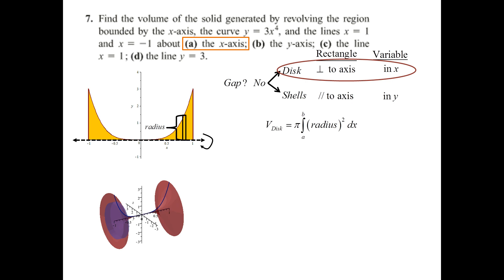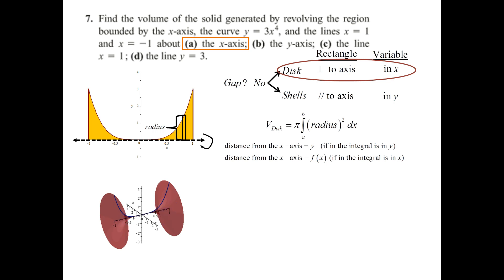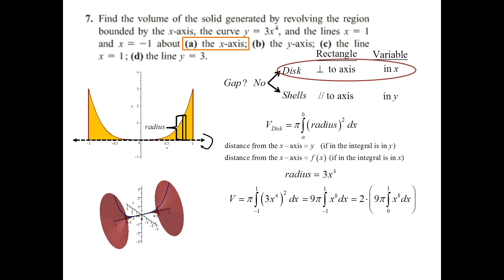When you're flushed up against the axis like this and the axis is the x-axis, then the height off of the x-axis is the radius. The distance from the x-axis is called y, but since we're in x, we trade that in for the function value — basically f(x). The function is 3x to the 4th. So this integral is simply pi times the integral from negative 1 to 1 of (3x⁴)² dx. Square the entirety of the inside — don't just square x⁴, also square the 3 to get a 9. Pull that 9 outside, and we have x to the 8th to integrate. The antiderivative is x to the 9th over 9.